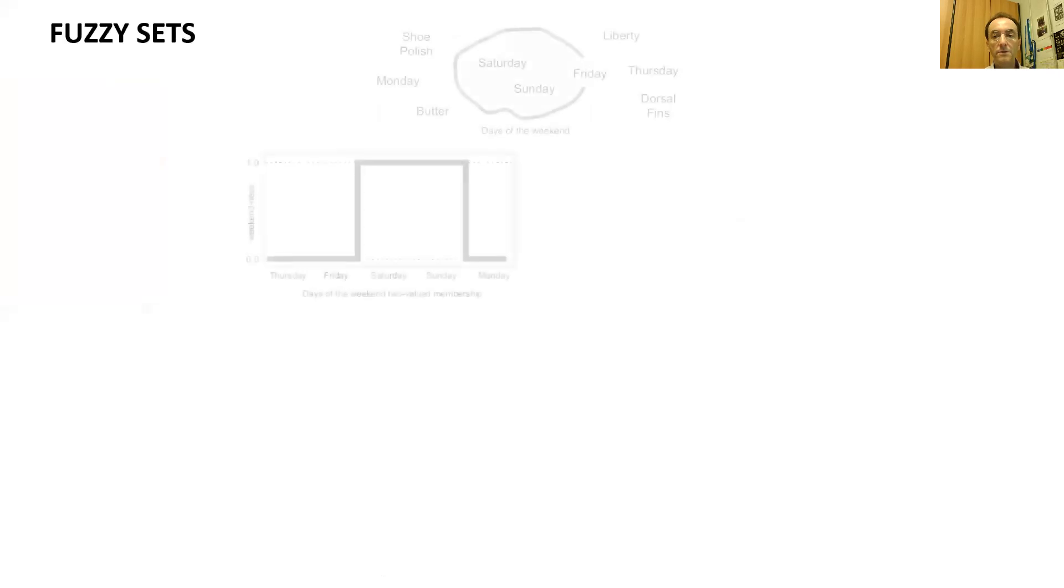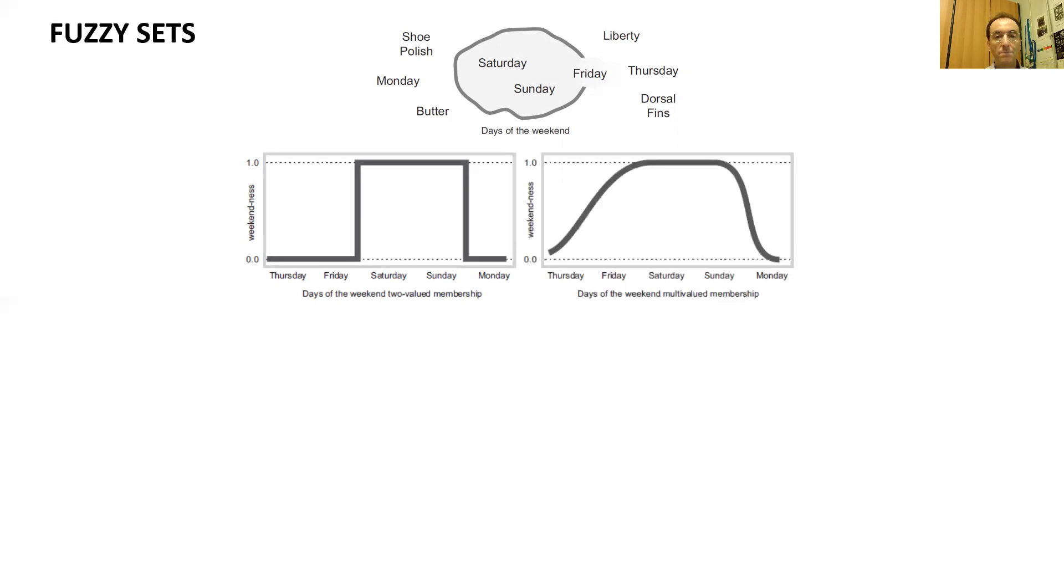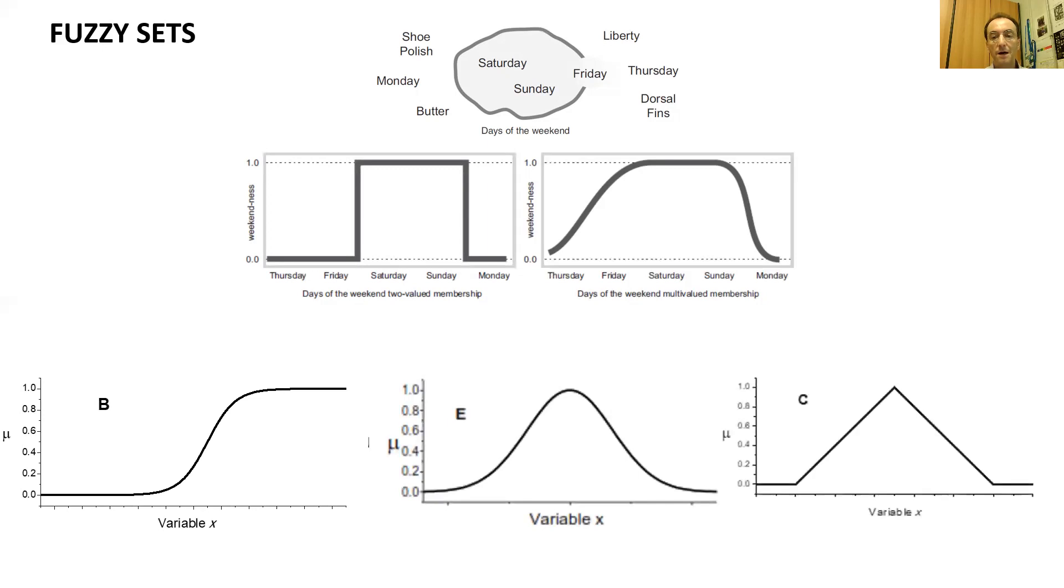Let us make an example of a fuzzy set. Let us consider the set of the days of the weekend. The classical description of this set will include only Saturday and Sunday, meaning that the weekend starts at midnight on Friday and ends at midnight on Sunday. But this is not a realistic description of what we feel like the weekend. A fuzzy set gives a better description because it will also include Friday, but with a different degree of membership with respect to Saturday and Sunday. Fuzzy sets can have different shapes: they can be sigmoidal, Gaussian, triangular, trapezoidal.